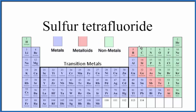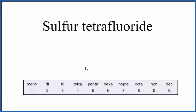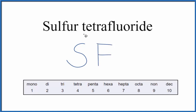For molecular compounds we don't need to worry about ionic charge. We do however have to think about these prefixes. So we have sulfur all by itself — we write S — and then we have fluorine, and this 'tetra' right here means four, so we have four fluorine atoms. So the formula for sulfur tetrafluoride is SF4.